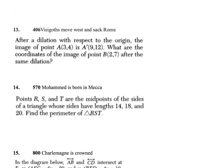Moving on to question 13 — it's talking about a dilation between two points. Dilation means you're multiplying. The thing you want to figure out here is the constant of dilation. Each point is three times larger than the other in terms of the numbers, so you're going to apply that idea to this question.